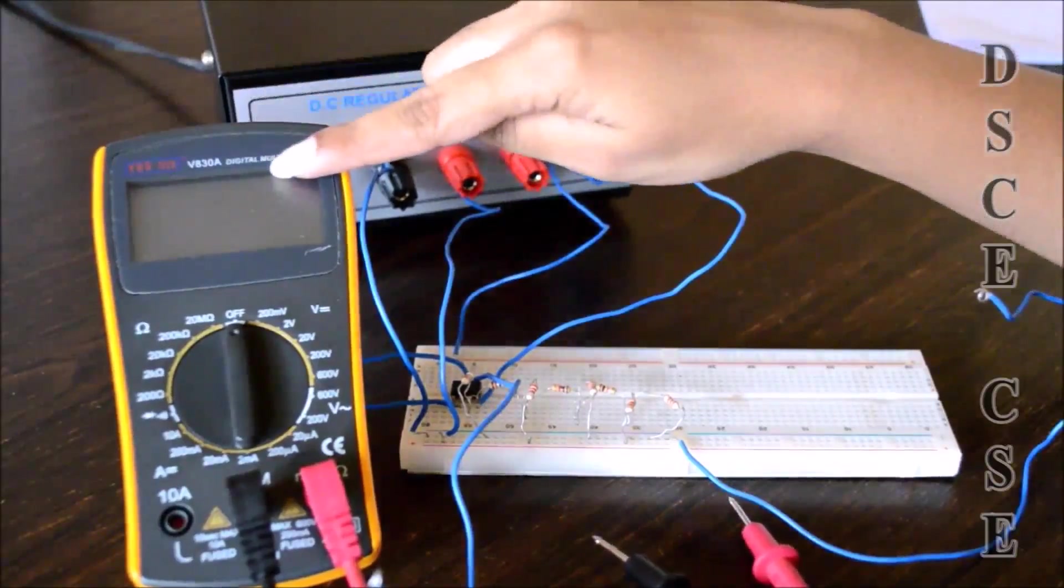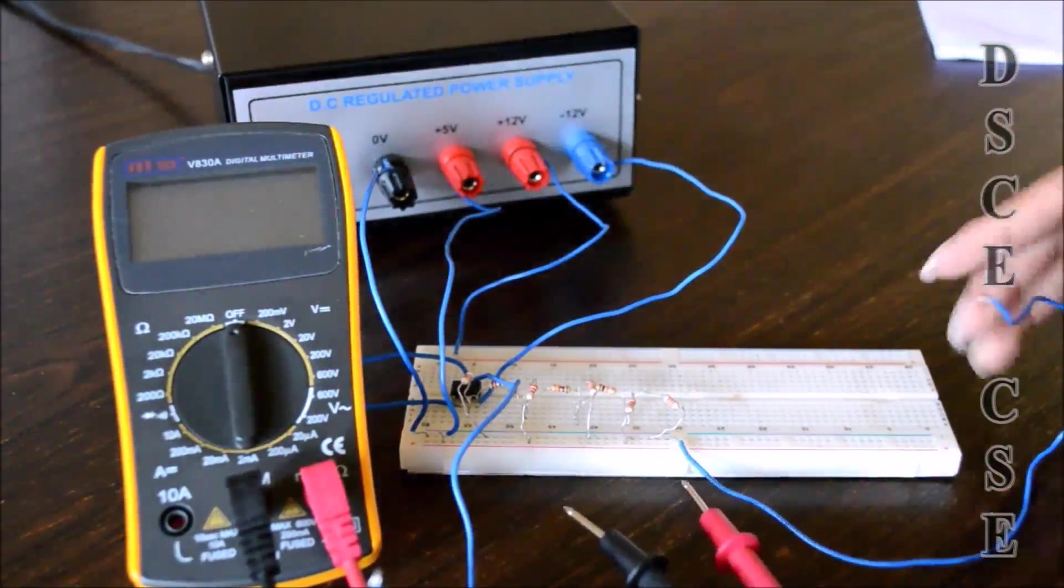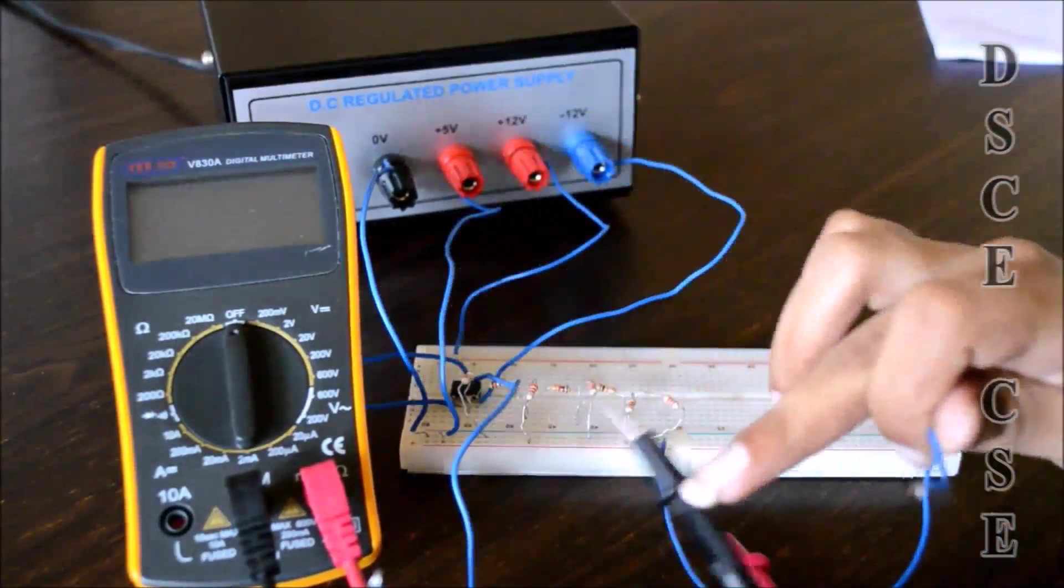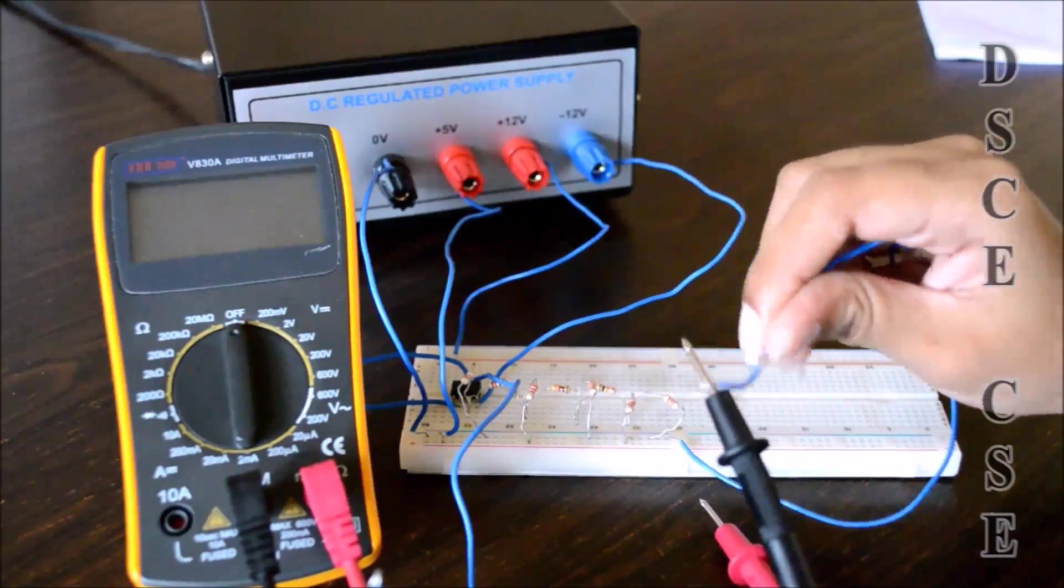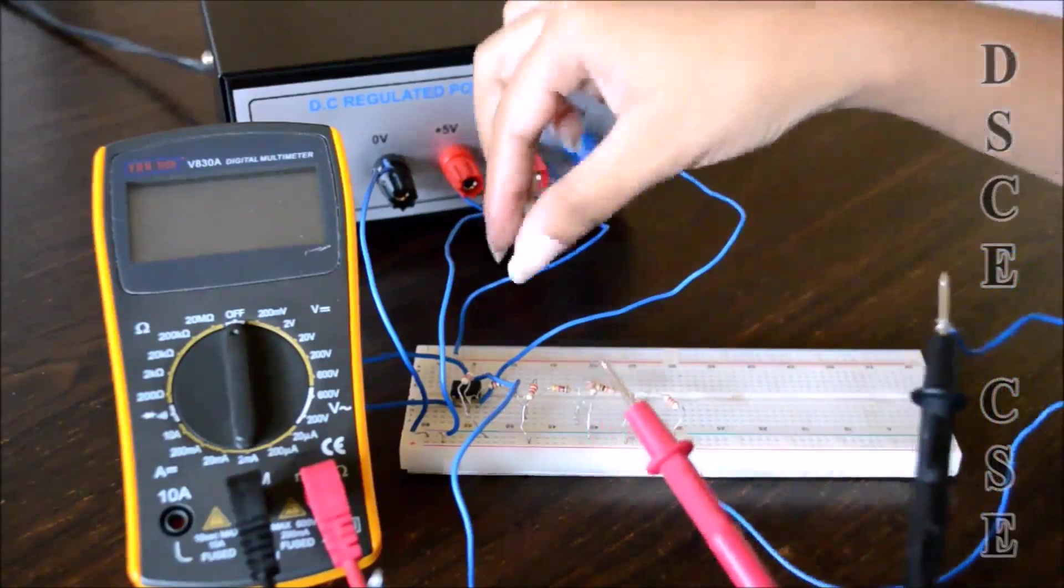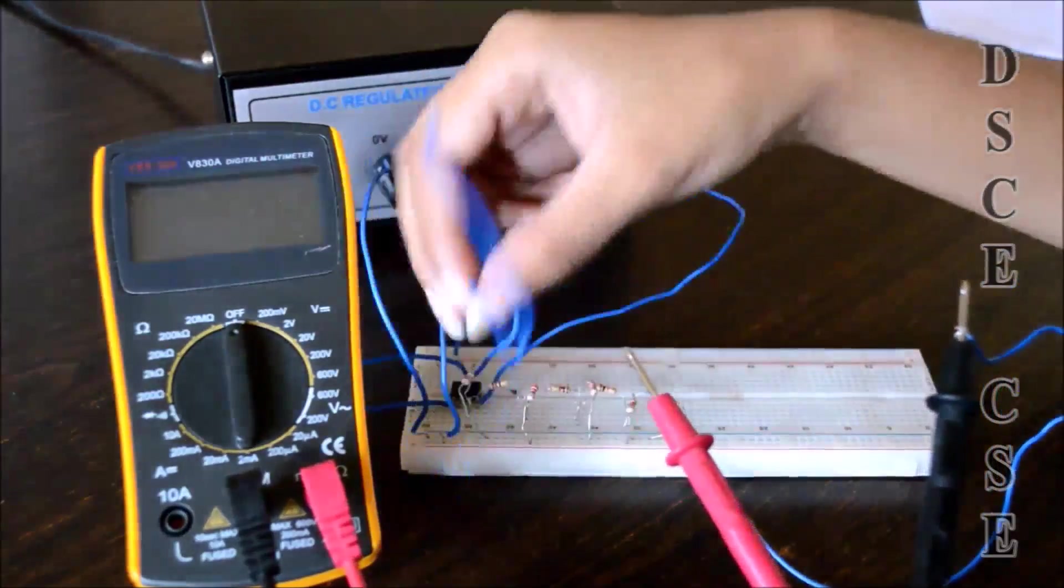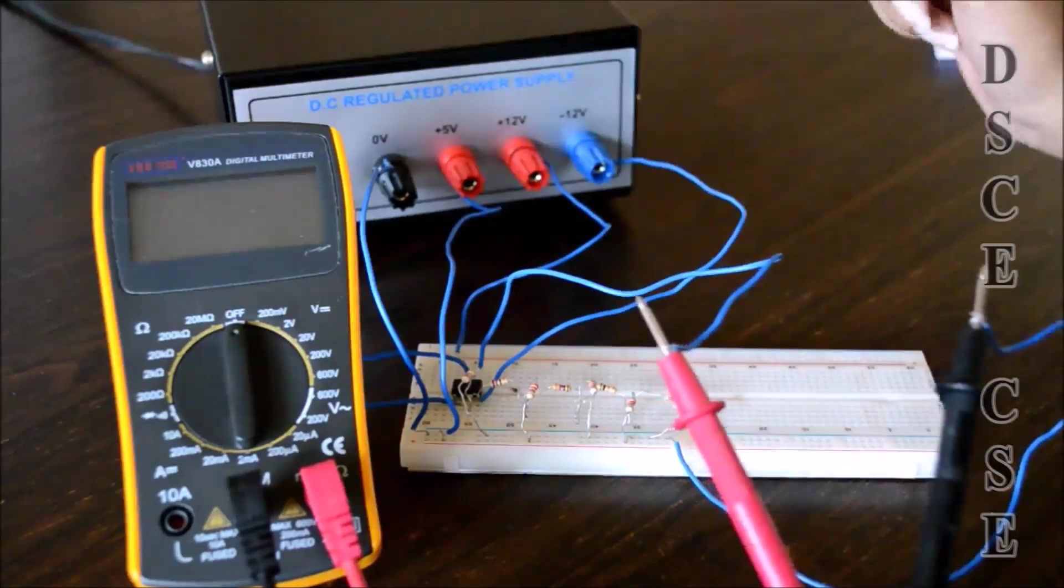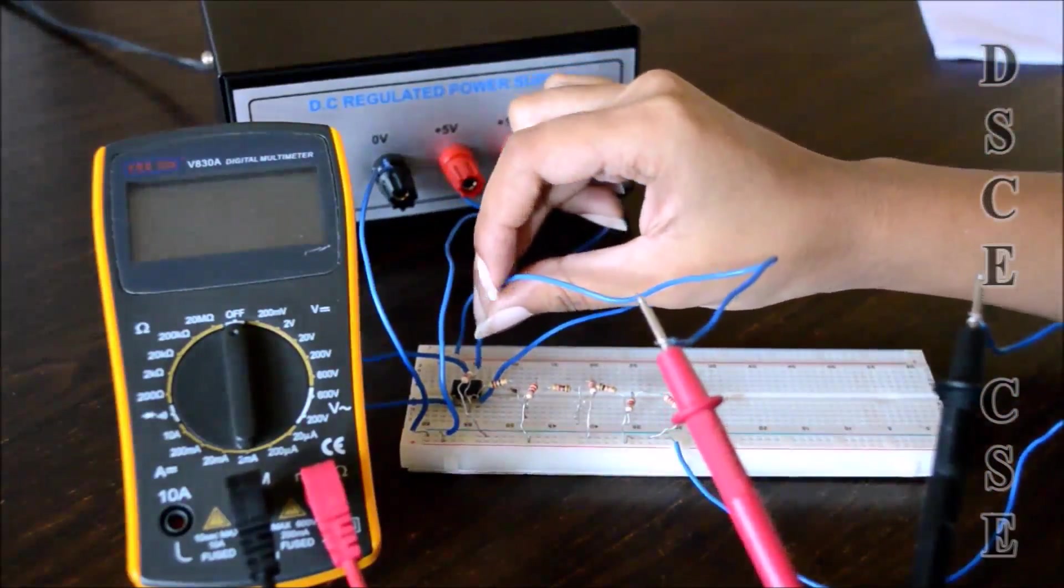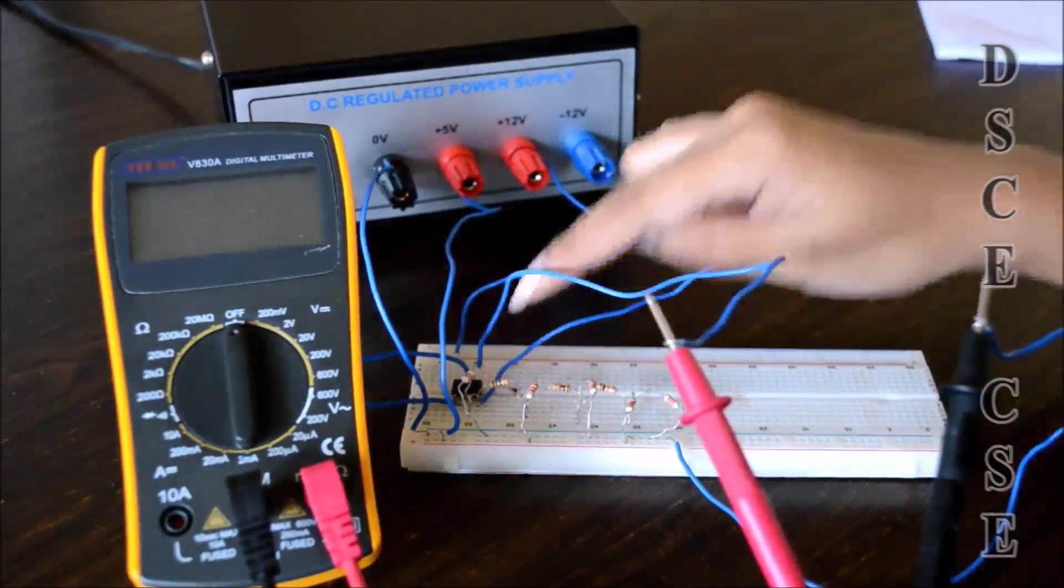We are going to be using a multimeter. The negative of the multimeter is connected to the common ground, and the output is connected to the positive of the multimeter. The output is taken from pin 6 of the 741 IC.